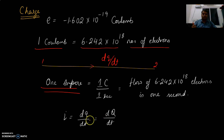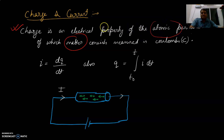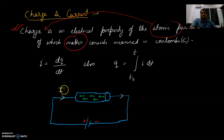We can define what charge is. Charge is an electrical property of the atomic particles of which matter consists, measured in coulombs. Any matter consists of atomic particles, and those atomic particles have a charge. The holes flow from the positive terminal to the negative terminal, and electrons flow from the negative terminal to the positive terminal. This flow of holes is called current — the rate of change of charge.